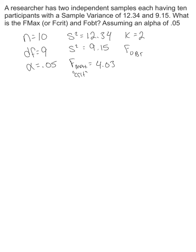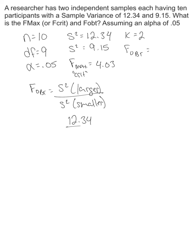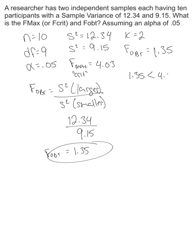Now let's calculate F-obtained. F-obtained equals the larger variance divided by the smaller variance: 12.34 divided by 9.15. That gives us an F-obtained of 1.35 — that's really small, which is good. As long as F-obtained is smaller than our F-max, we can proceed. That's true here because 1.35 is smaller than 4.03.